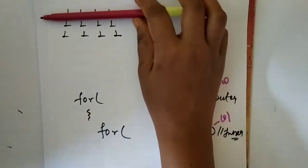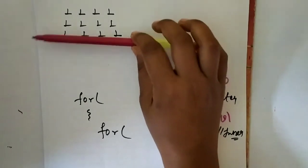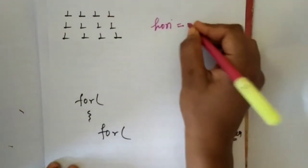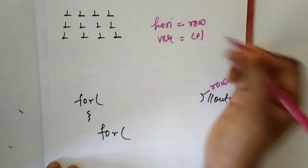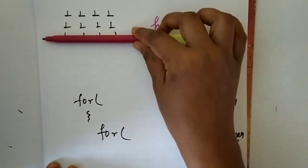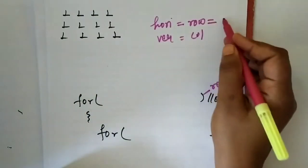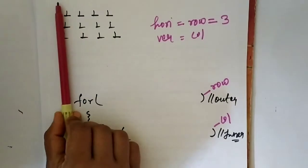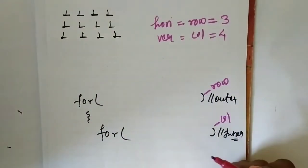First, see how many rows and how many columns there are. In the pattern there are one, two, three horizontal lines — horizontal means row. And there are one, two, three, four vertical lines — vertical means column. So the number of rows is three and the number of columns is four.